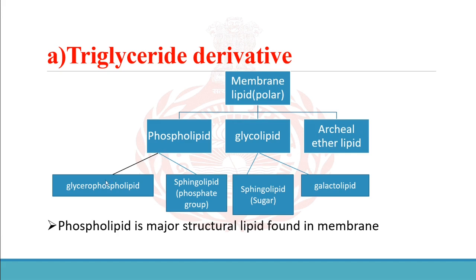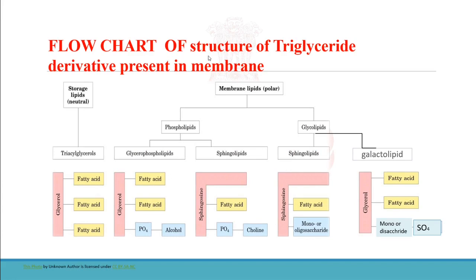Phospholipid is of two types: glycerophospholipid and sphingolipid. Glycolipid is again of two types: sphingolipid and galactolipid. Phospholipid is the major structural lipid found in the membrane. This flow chart shows the structure of triglyceride derivatives present in the membrane. The base of all these derivatives is the stored triglyceride, which is neutral in nature. All these derivatives are polar in nature.